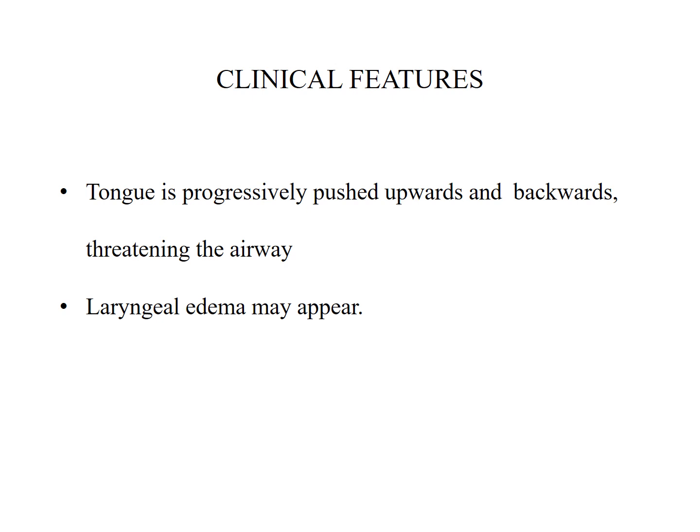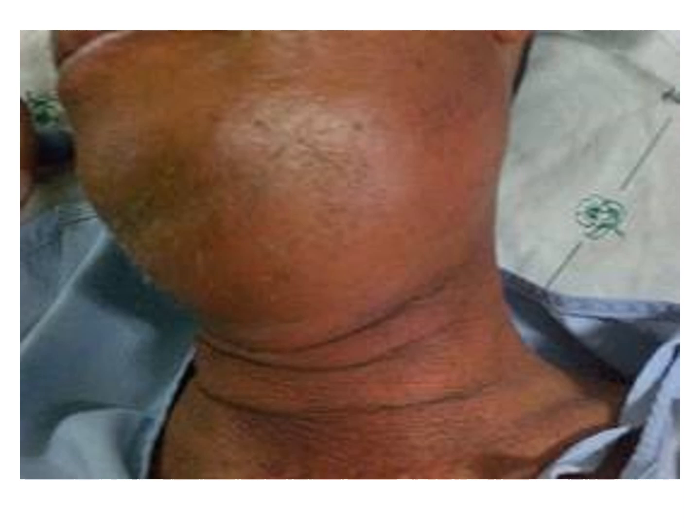The tongue is progressively pushed upwards and backwards, which can threaten the airway along with appearance of laryngeal edema. This picture shows the submandibular, submental, and submandibular area swollen.